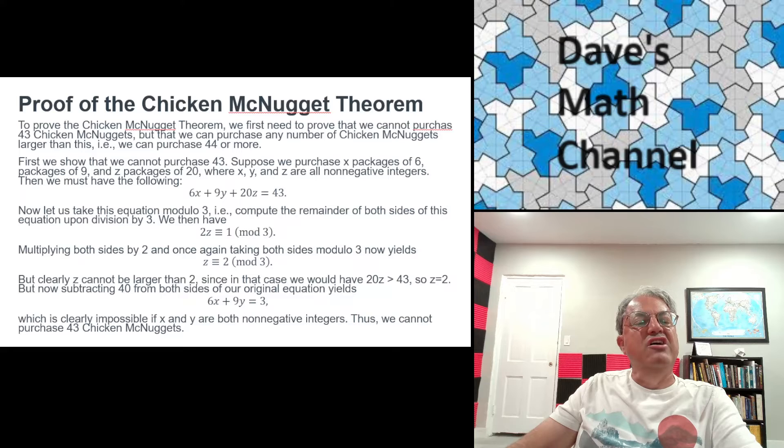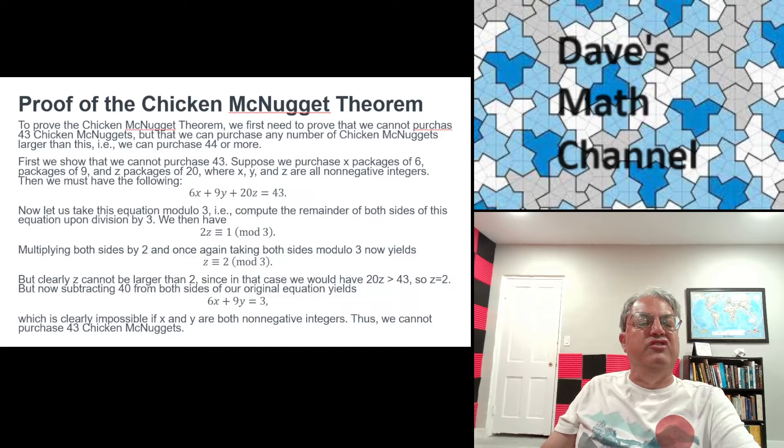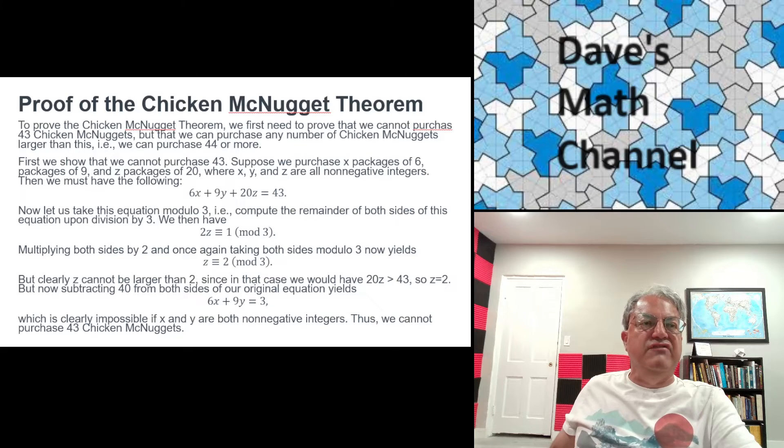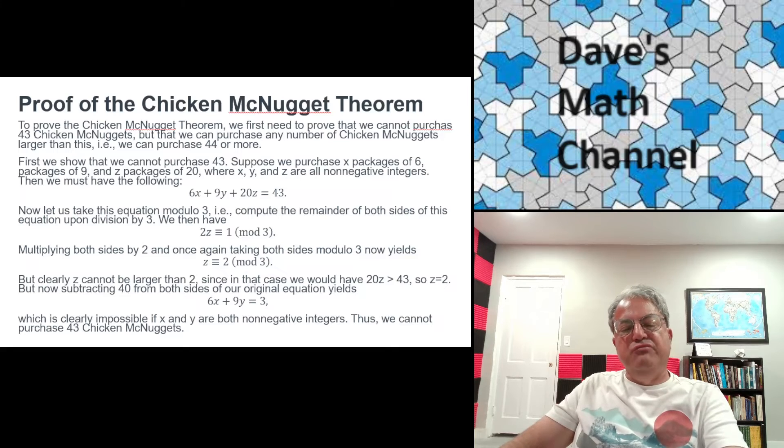We've already established that. But now what do we do? Well, we subtract 40 from both sides. So now it's pretty easy to see if Z is 2, 20Z is 40. So if we subtract 20Z, which equals 40 from both sides, we're left with 6X plus 9Y equals 3. Well, that's clearly impossible. Because remember that X and Y are non-negative integers. There's no combination of non-negative integers X and Y that'll give you 3 on the right side. That's like asking for buying 3 Chicken McNuggets. Obviously you can't do that because the smallest pack has size 6. So that completes the proof. 43 is impossible.